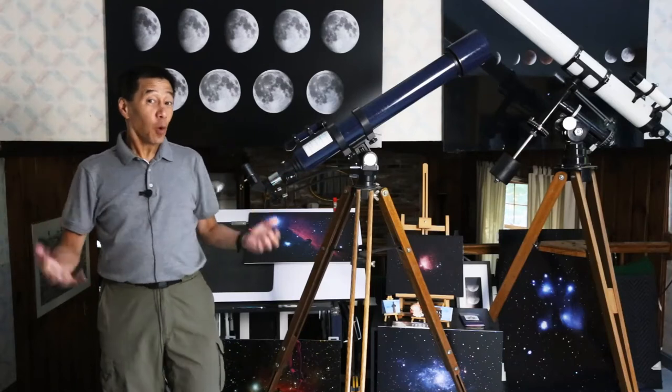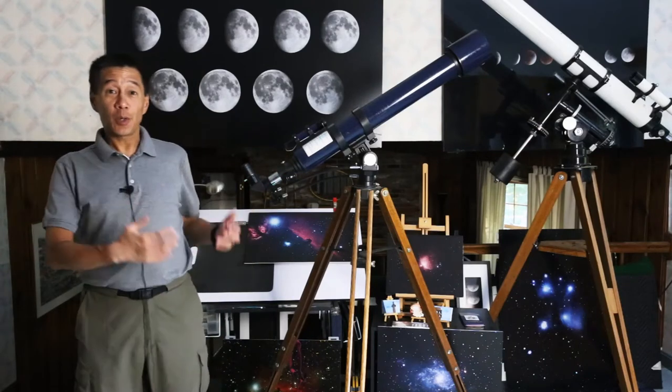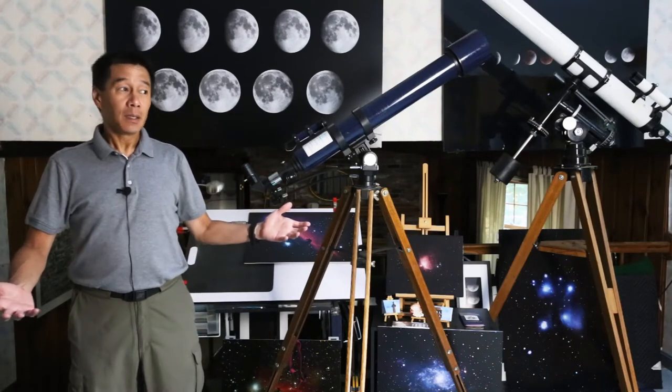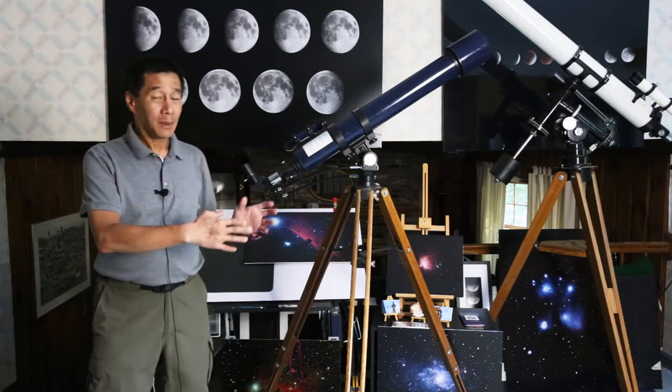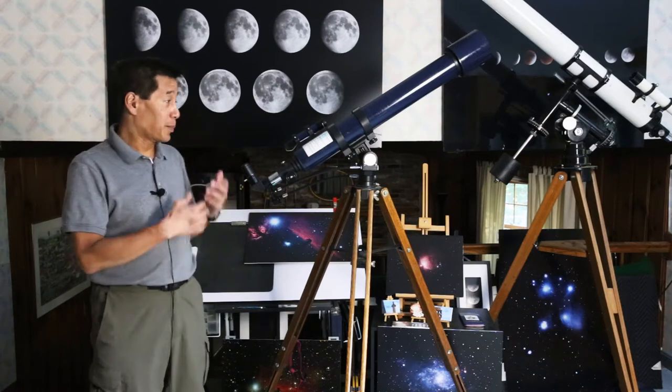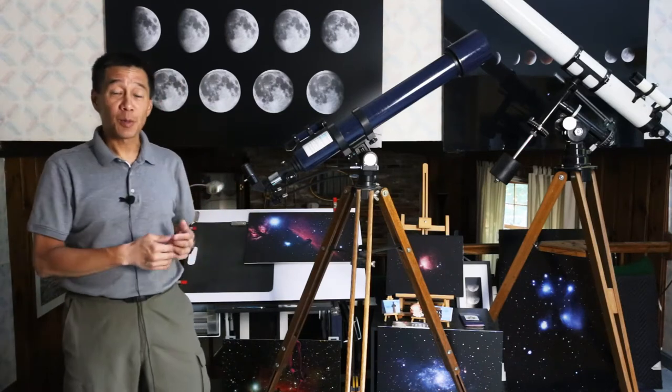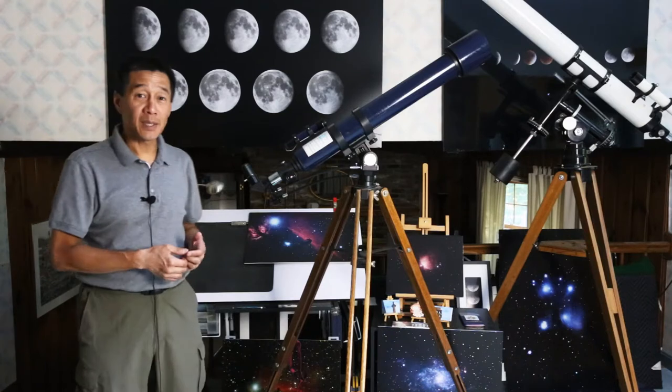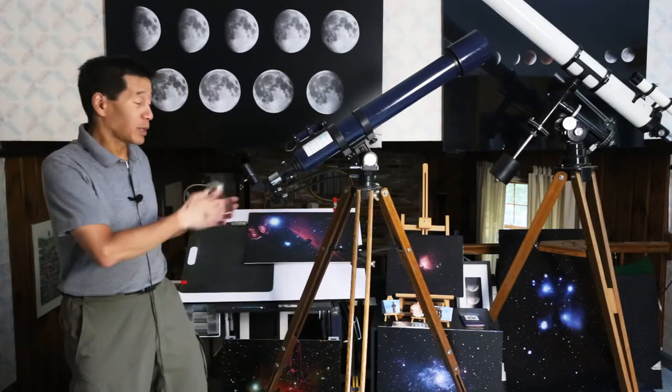And here it is, the 4-inch F10 Celestron refractor. It's not a 4-inch F10 Celestron refractor. It's a Meade 80 millimeter model number 312 from the late 1980s. That's okay. These were pretty good telescopes.